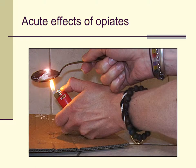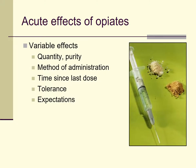Let's talk about the acute effects of opiates. The effects are variable, as is arguably true of any drug. In the case of opiates, it depends a lot on the quantity and purity of the drug — especially if you're buying on the street, like heroin, which can vary markedly in purity. It also depends on the route of administration, how long since you last used, your tolerance, and the expectations you have about the type of effects you'll get.